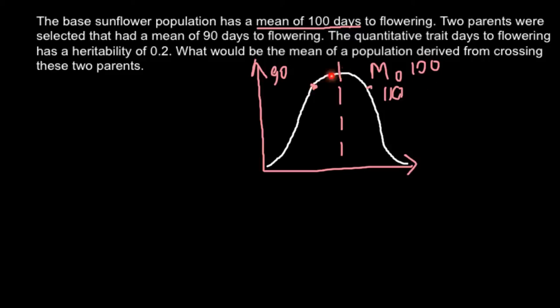So we selected parents here. According to our problem, only two parents were selected. Usually it's not done like this — you have to take at least 20 or 30; the more the better. Because when you take only two parents, there is a big chance that they show their characteristic due to environmental influence, and not necessarily due to superior genetics. In our problem, superior genetics would mean that plants flower ten days earlier.